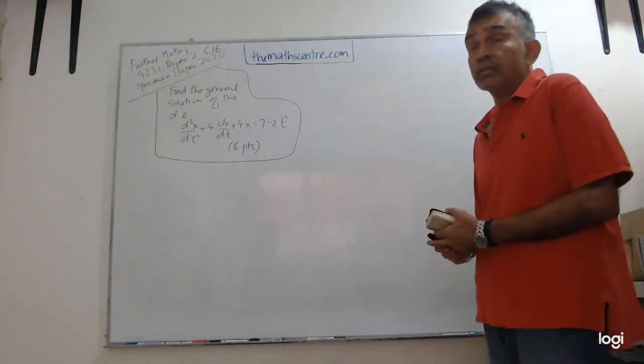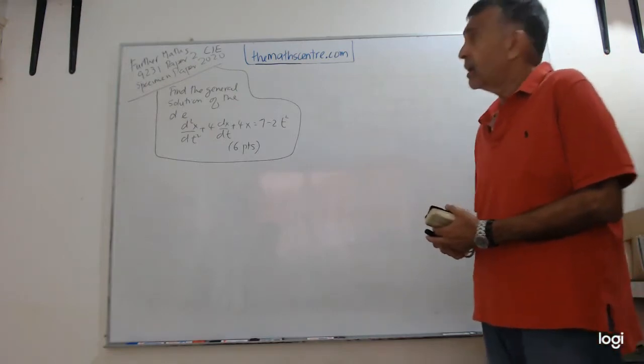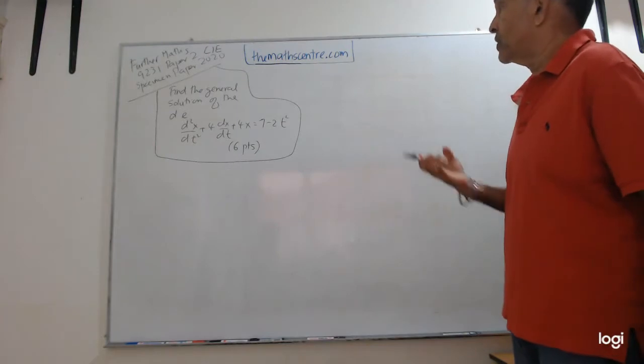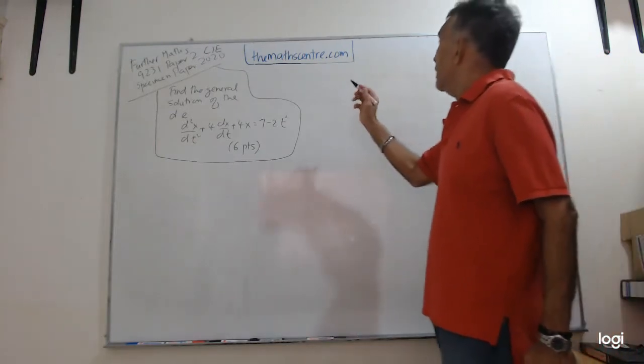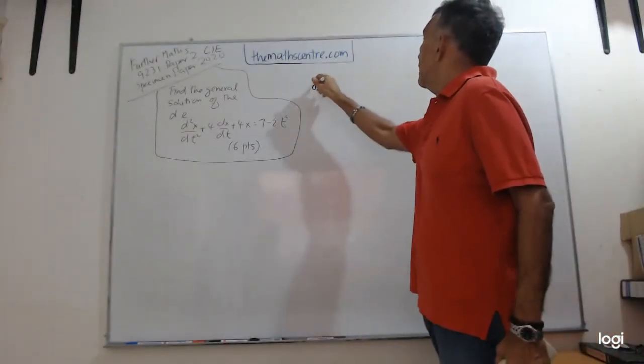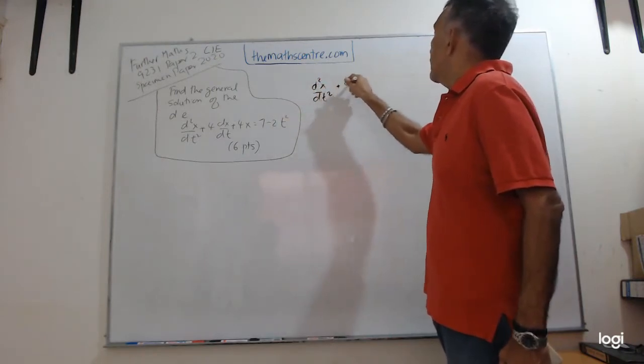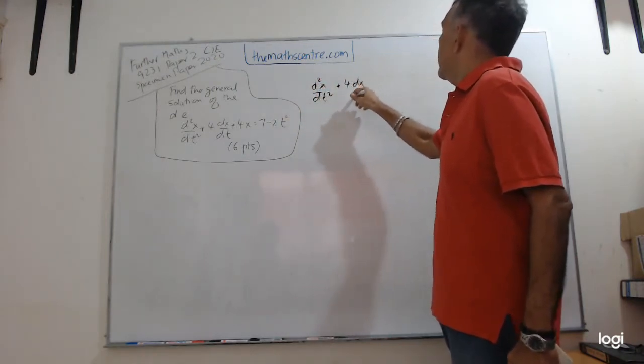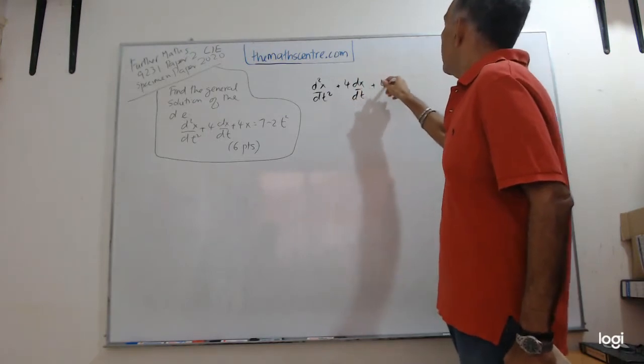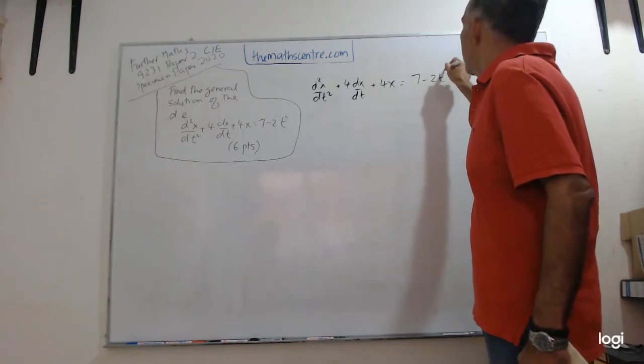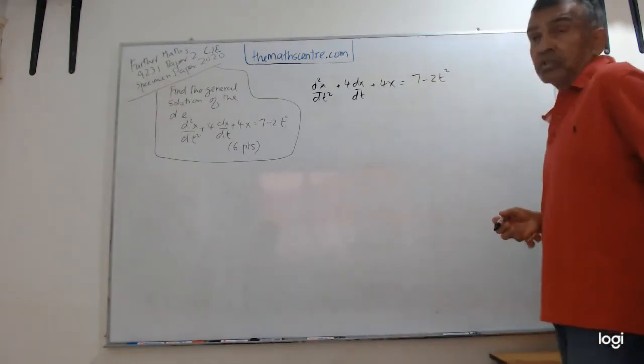This problem here is not difficult. This was number one on the specimen paper. Find the general solution of the differential equation t²(d²x/dt²) + 4t(dx/dt) + 4x = 7 - 2t².